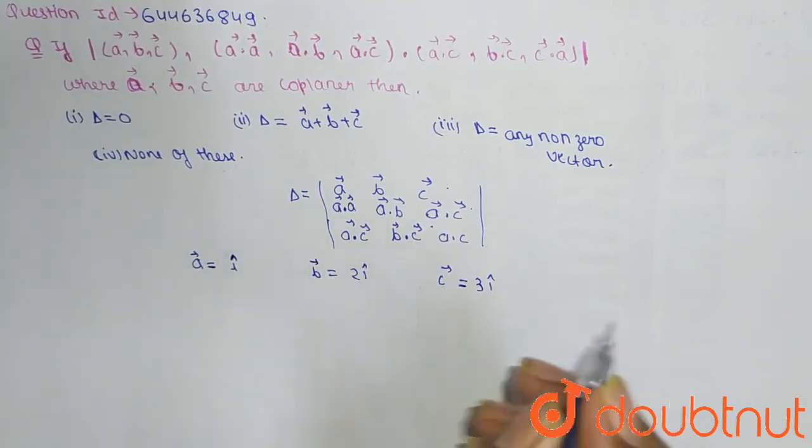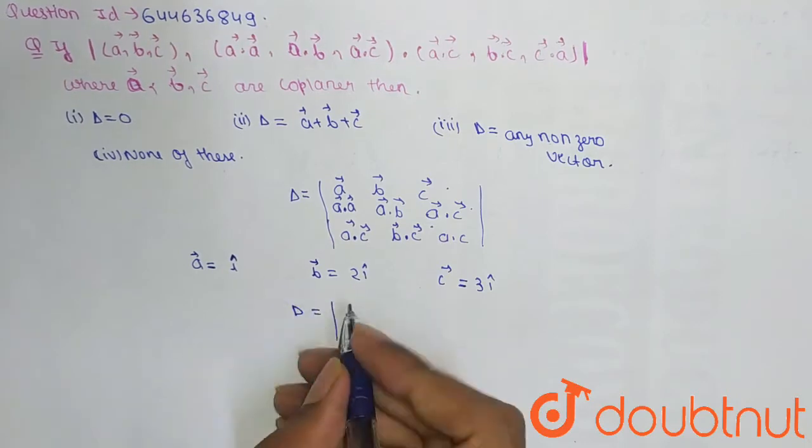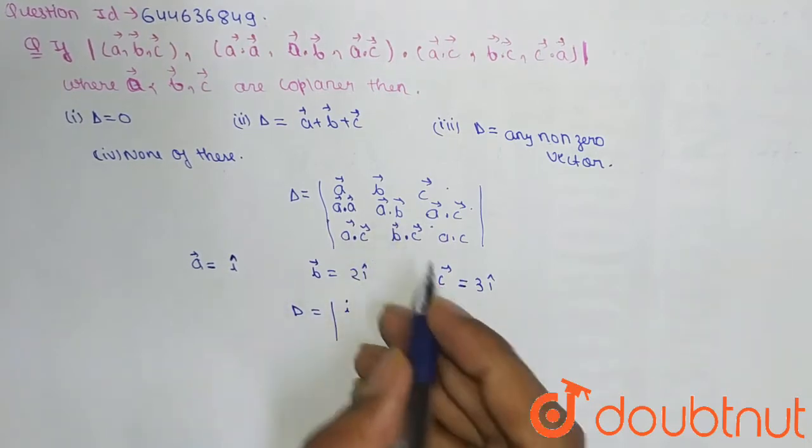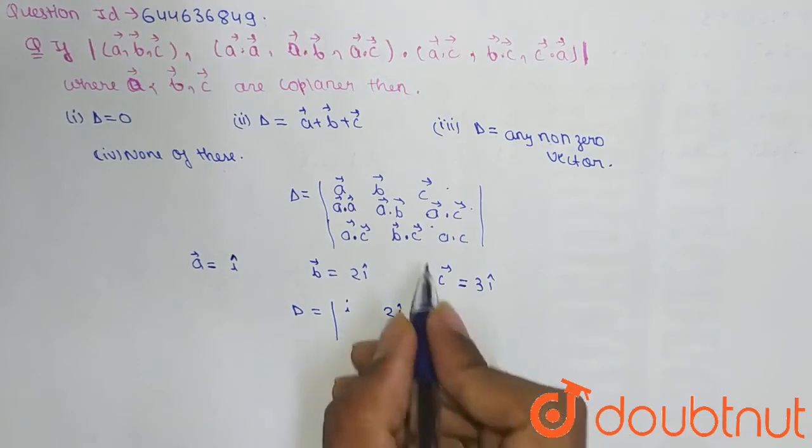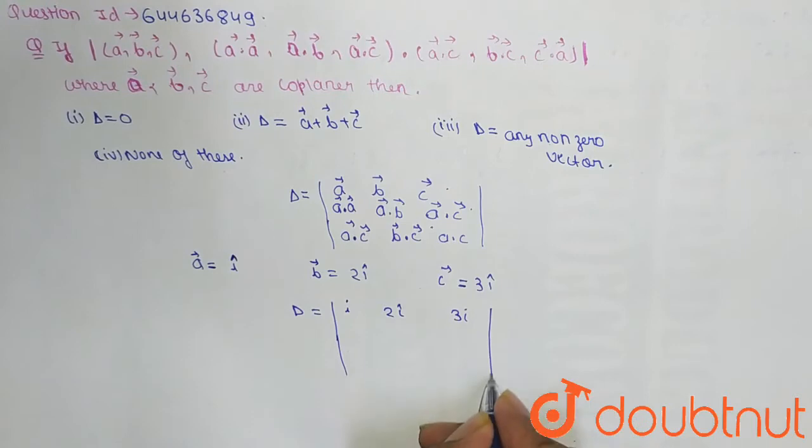To simplify this question, now put these values in the given determinant. So A is equal to I, B is equal to 2I, and C is equal to 3I. Now A cross A,